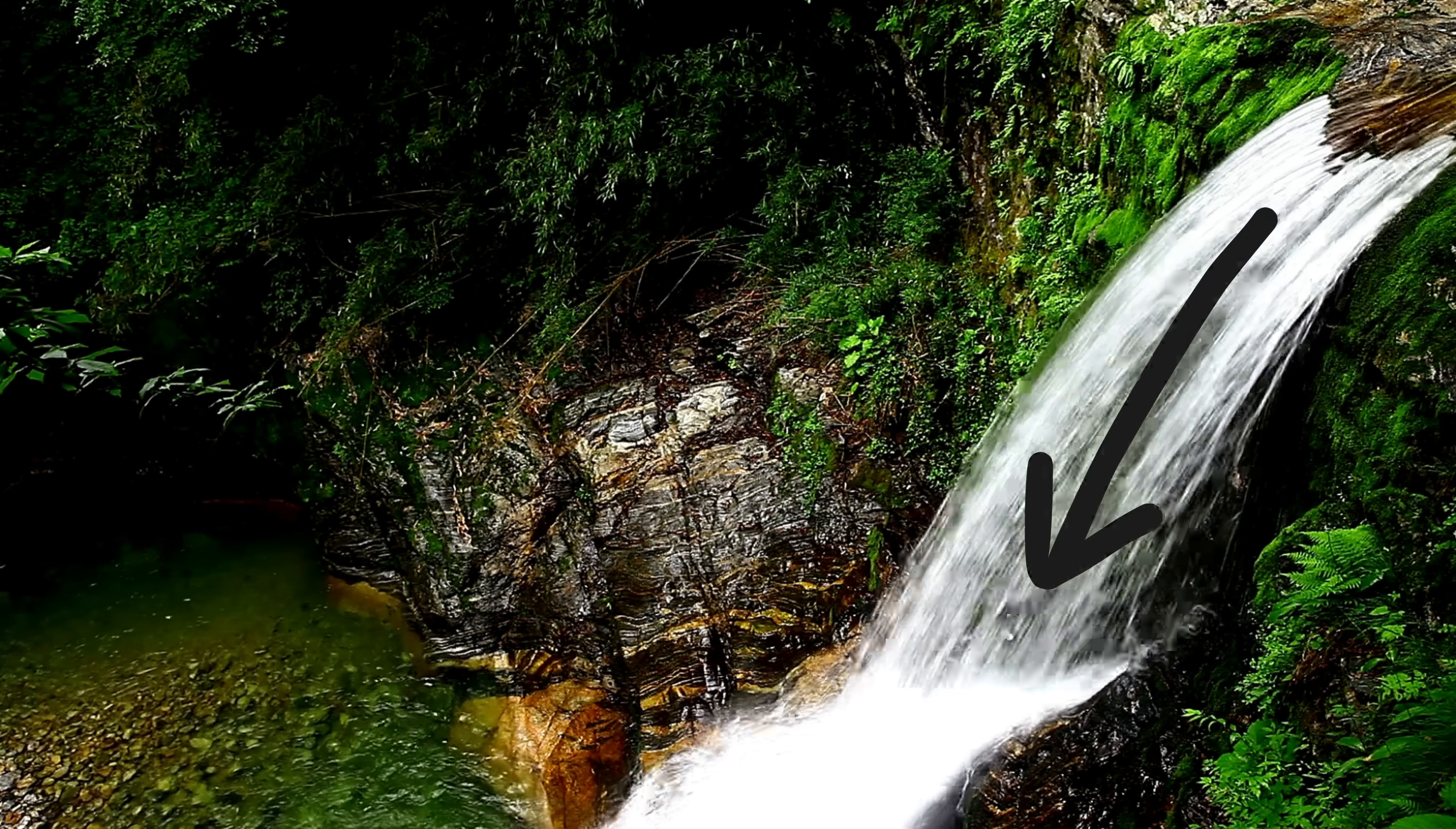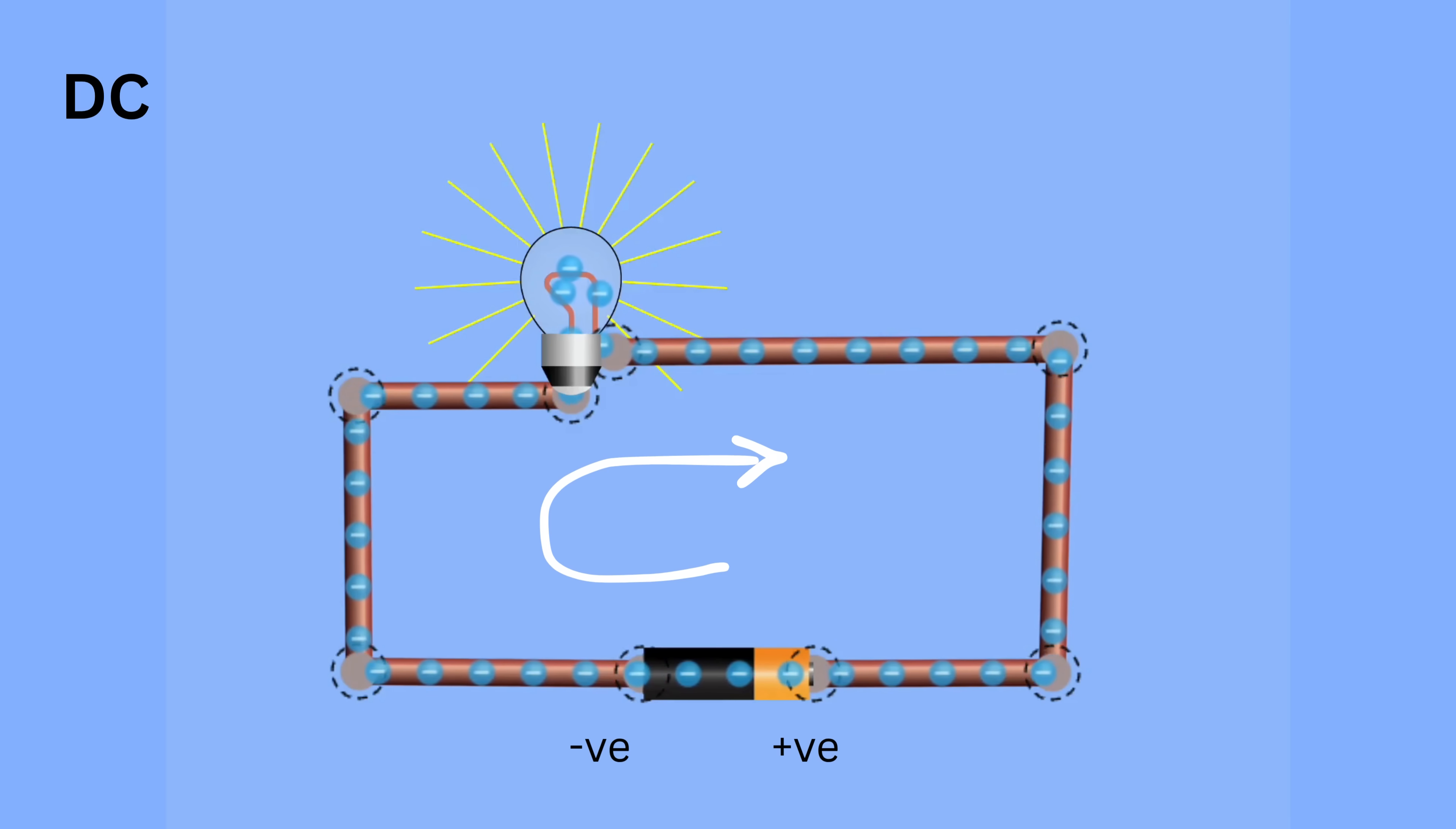In a DC circuit, electrons move steadily from the negative side to the positive side of the power source, such as a battery. So conventionally, we make the direction of the current in the opposite direction of the flow of electrons, which means from positive terminal to negative terminal.